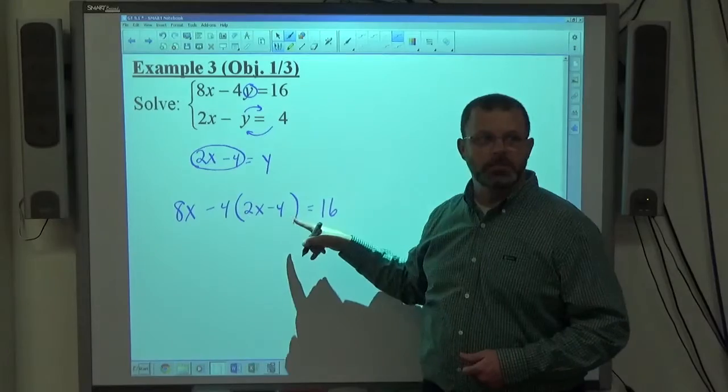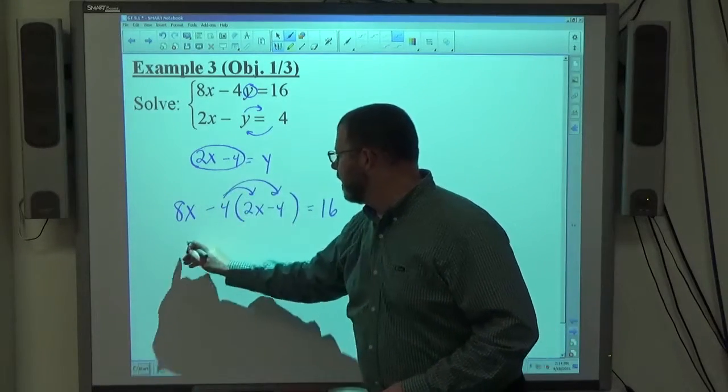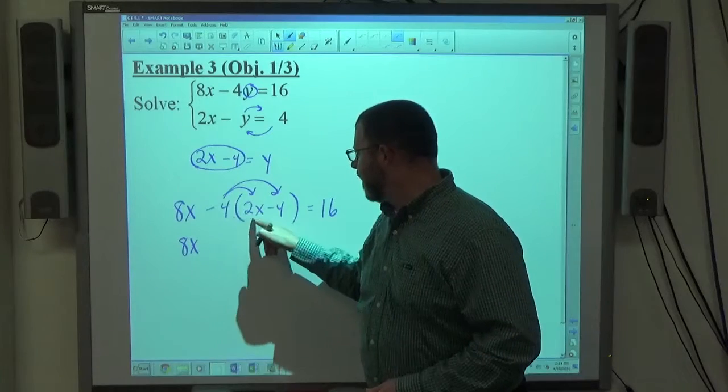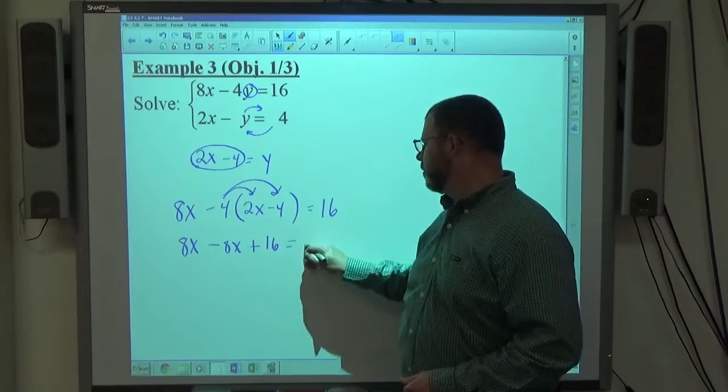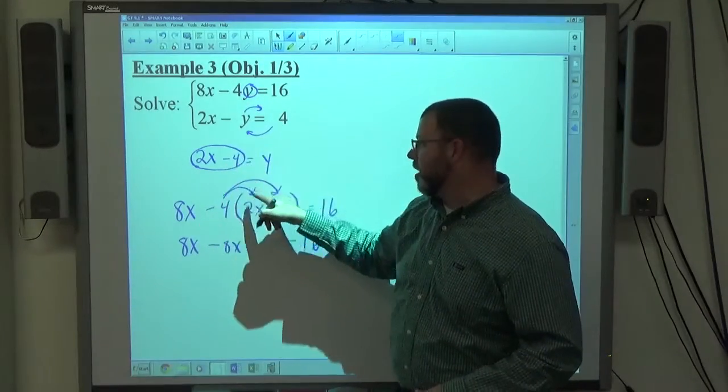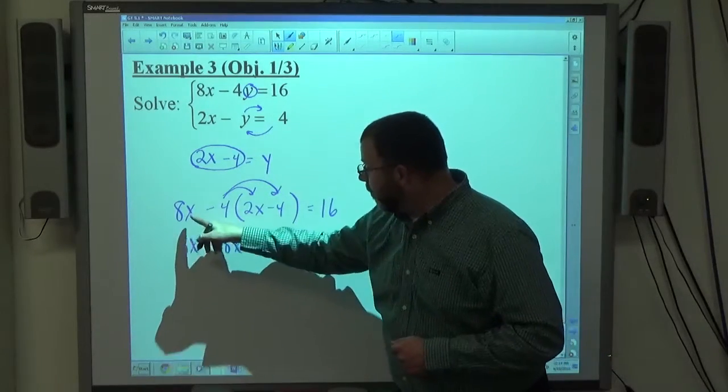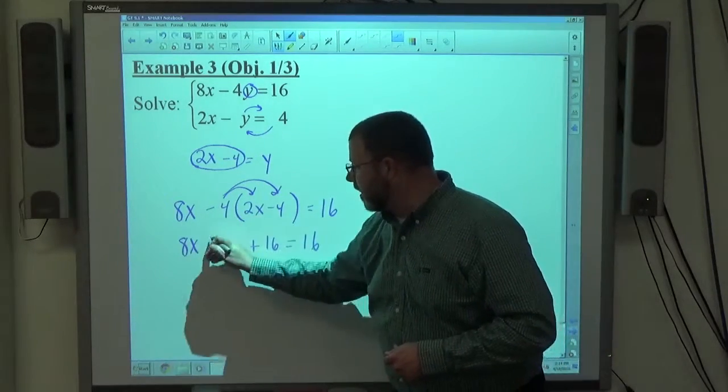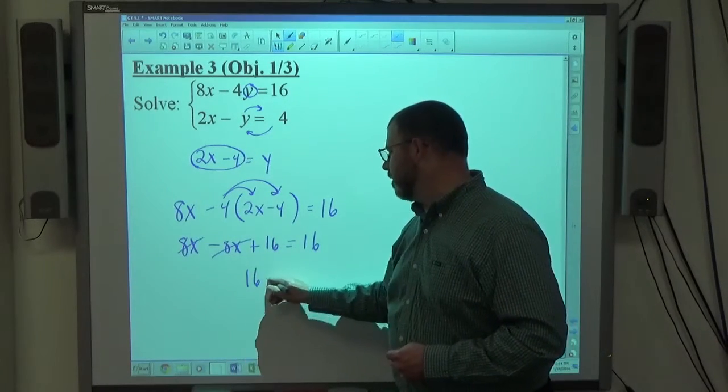If I distribute this negative 4 through the parentheses, that gets me 8x, negative 4 times 2x makes minus 8x, minus 4 minus 4 makes plus 16, equals 16. Replacing y with this x expression got rid of y. By simplifying 8x minus 8x, x also cancels, getting rid of x, leaving me with an expression that says 16 equals 16.